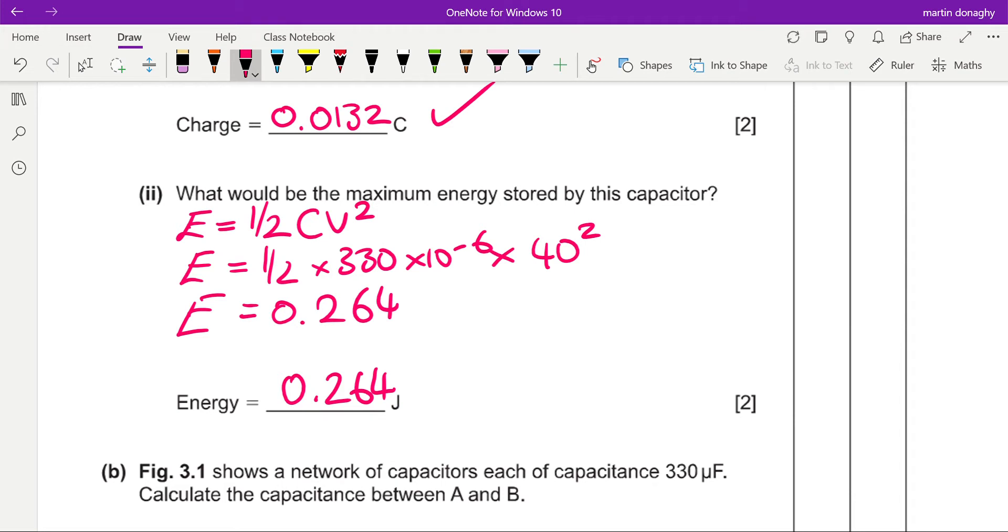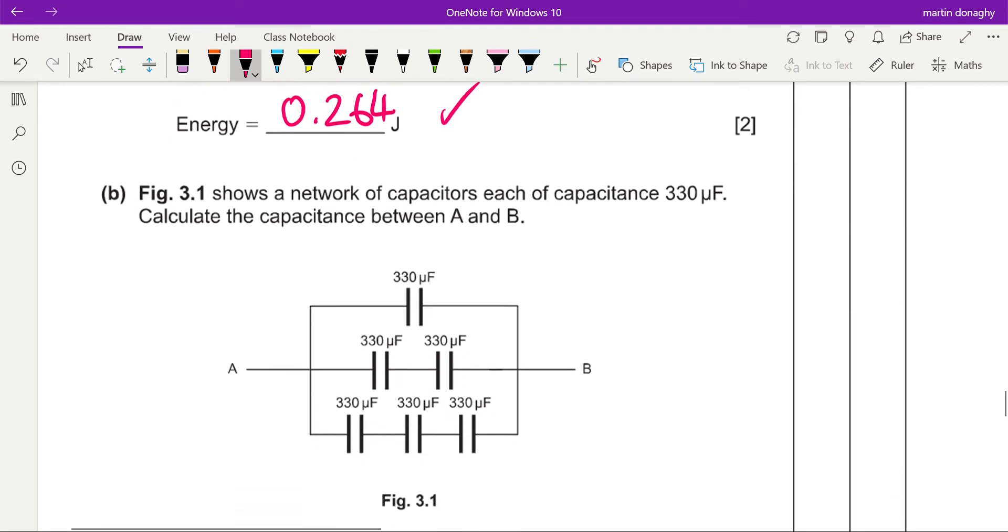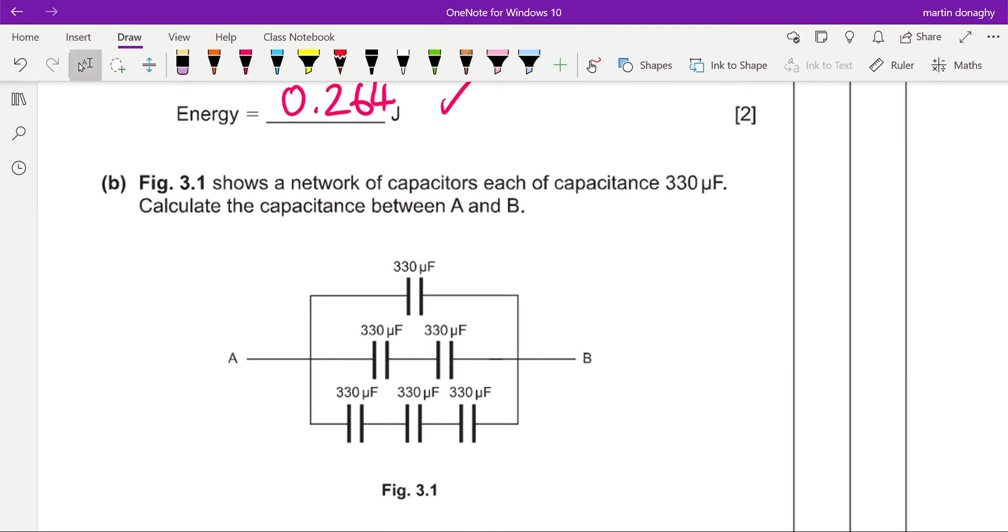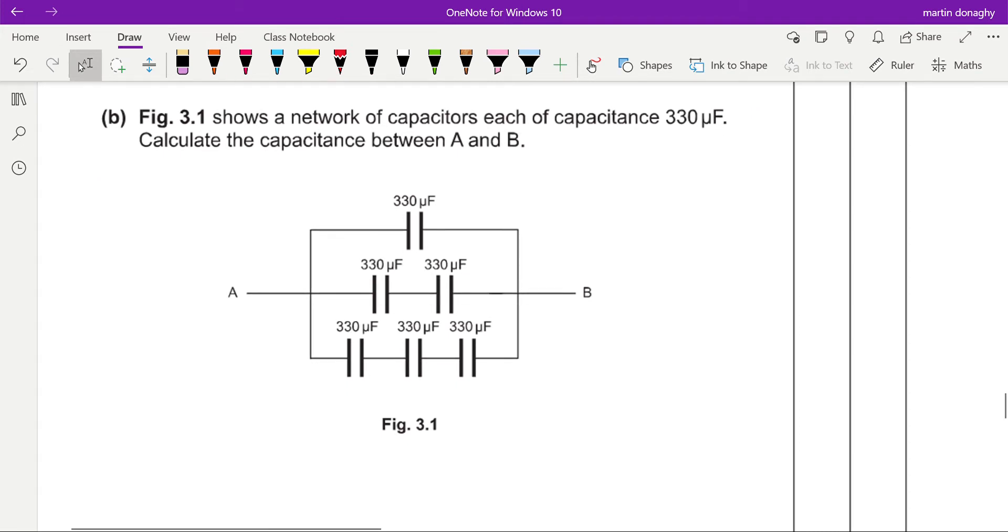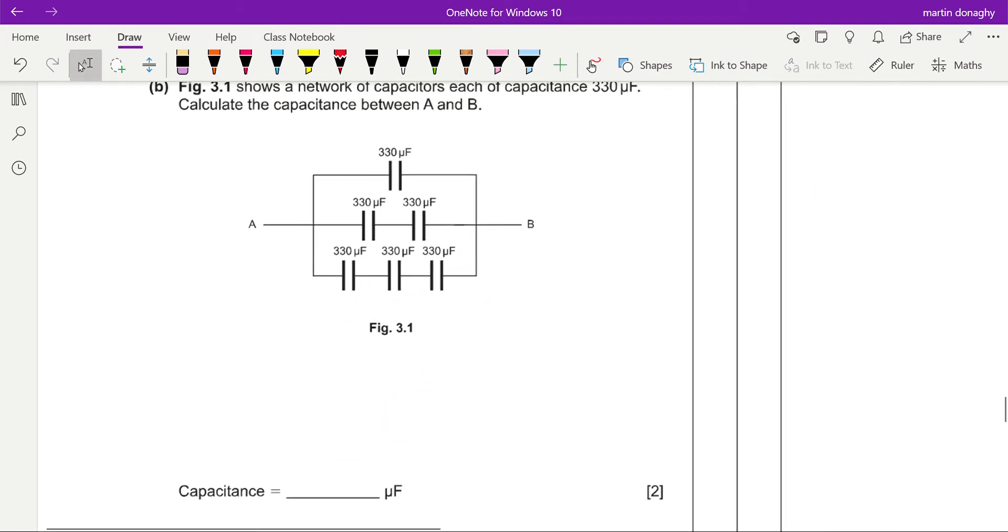Okay, nice easy four marks I would say there for an A level paper. Not so easy: Figure 3.1 shows a network of capacitors each of capacitance 330 microfarads. Calculate the capacitance between A and B.